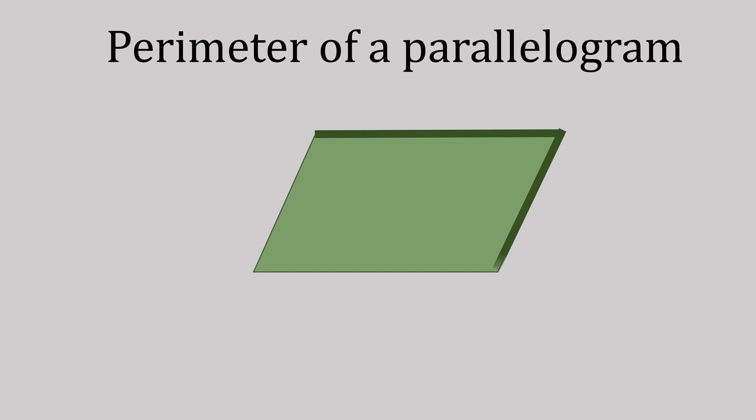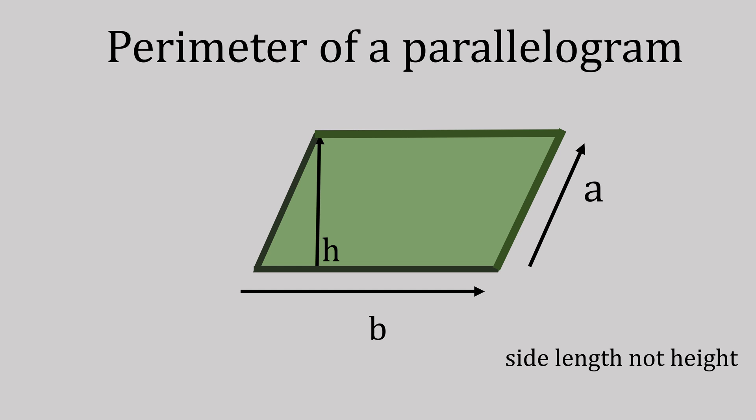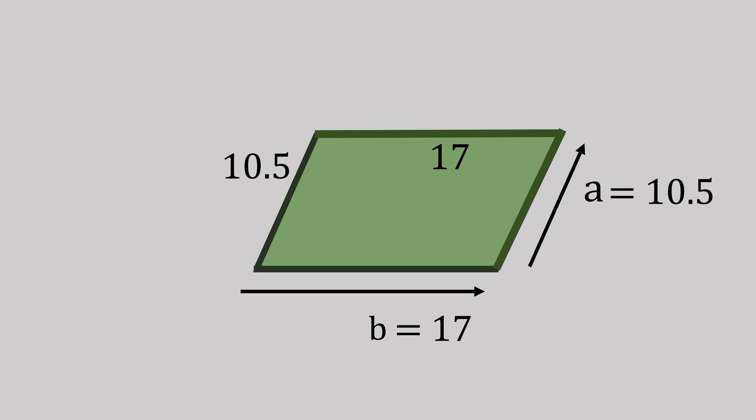Let's have another practice on the perimeter. So this time our measurements are a is 10.5 and b is 17. So that would be 10.5 plus 10.5 plus 17 plus 17, giving us 55.